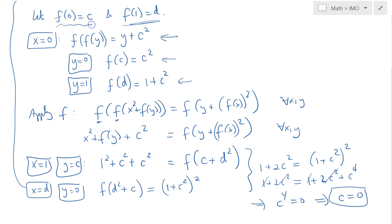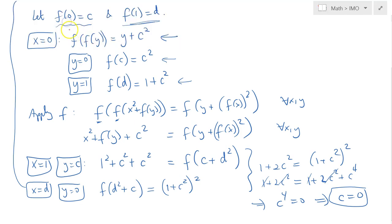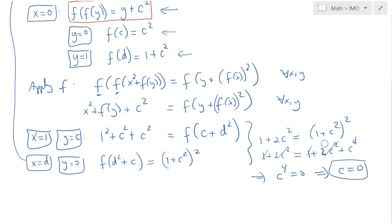We have just found that F of 0 is, in fact, equal to 0. As a result, the equation reduces to: knowing that C is 0, F of F of y is simply equal to y, for all y in R.